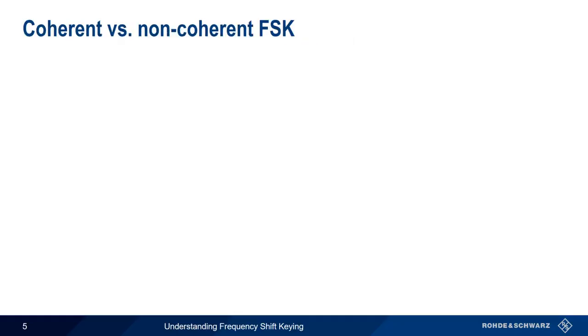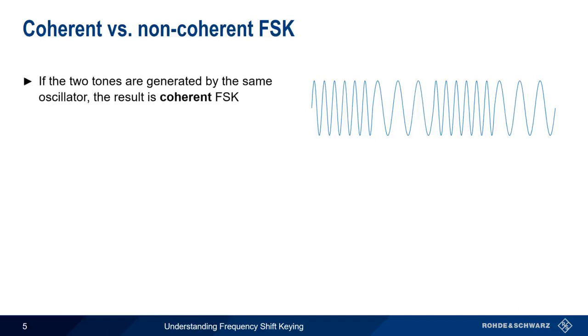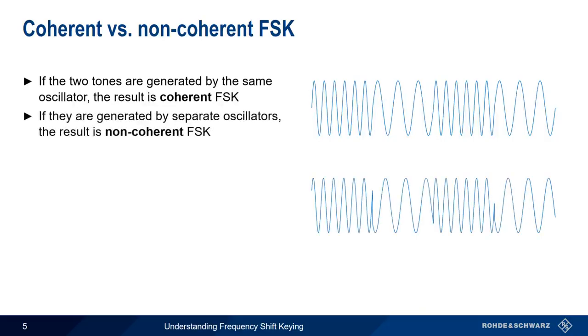We can also make a distinction between so-called coherent and non-coherent FSK. If our two BFSK tones are generated by the same oscillator, this is called coherent or continuous FSK. On the other hand, if they're generated by separate oscillators, this is called non-coherent or discontinuous FSK.